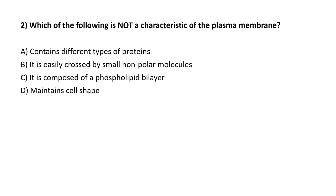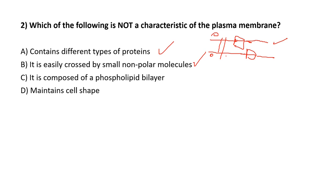This question asks which of the following is NOT a characteristic of the membrane. Option A — contains different types of proteins — is correct, as we've seen proteins outside, crossing, and on each periphery. Option B — easily crossed by small non-polar molecules — is also correct. Ions have problems crossing and need ion pumps, while non-polar molecules can easily cross. So far we have two correct options and haven't found the wrong one yet.